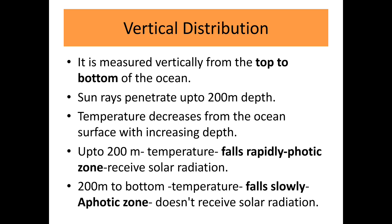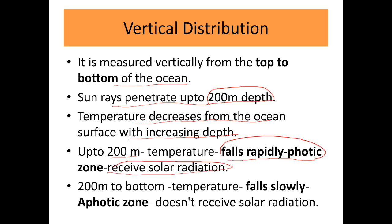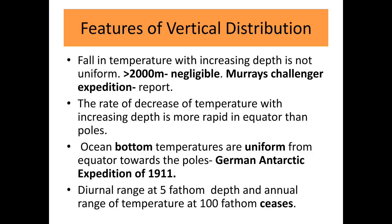Vertical distribution is measured vertically from top to bottom of the ocean. Sun rays penetrate very easily up to 200 meters depth. Temperature decreases from the ocean surface with increasing depth; up to 200 meters temperature falls rapidly — this zone is also called the photic zone because this region resists solar radiation. Beyond 200 meters down to the bottom, the temperature falls slowly — this is called the aphotic zone, which does not resist solar radiation.